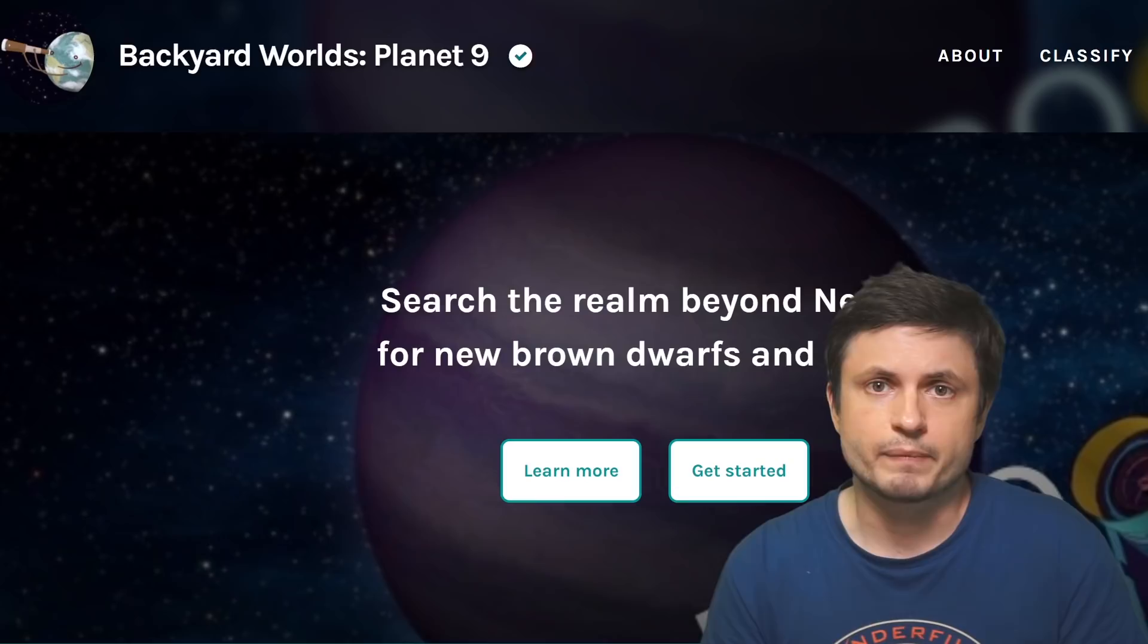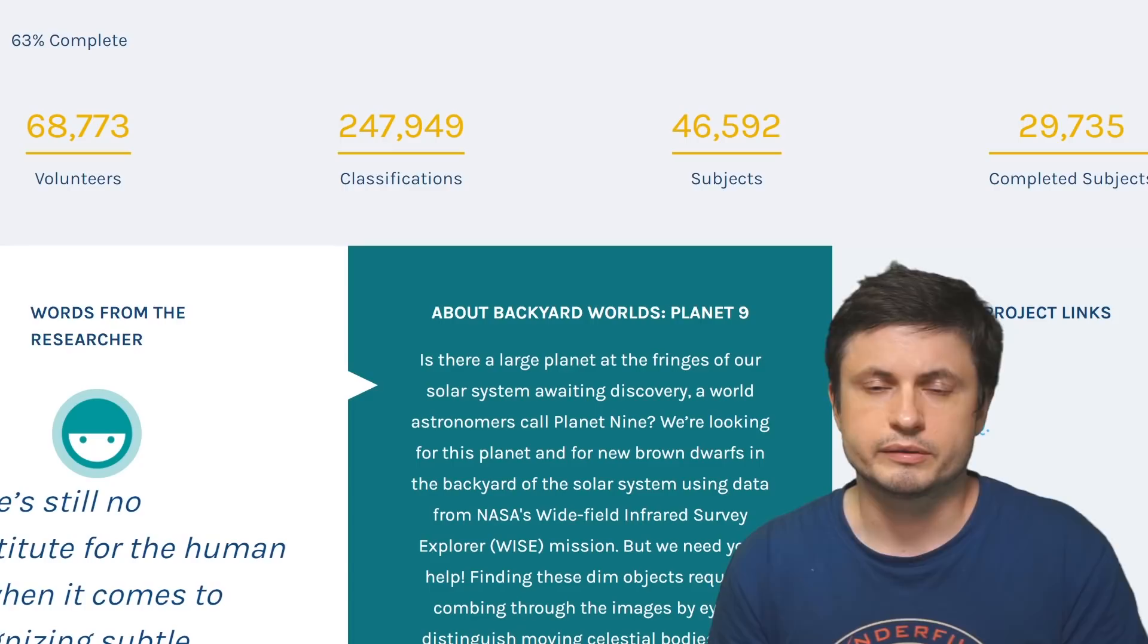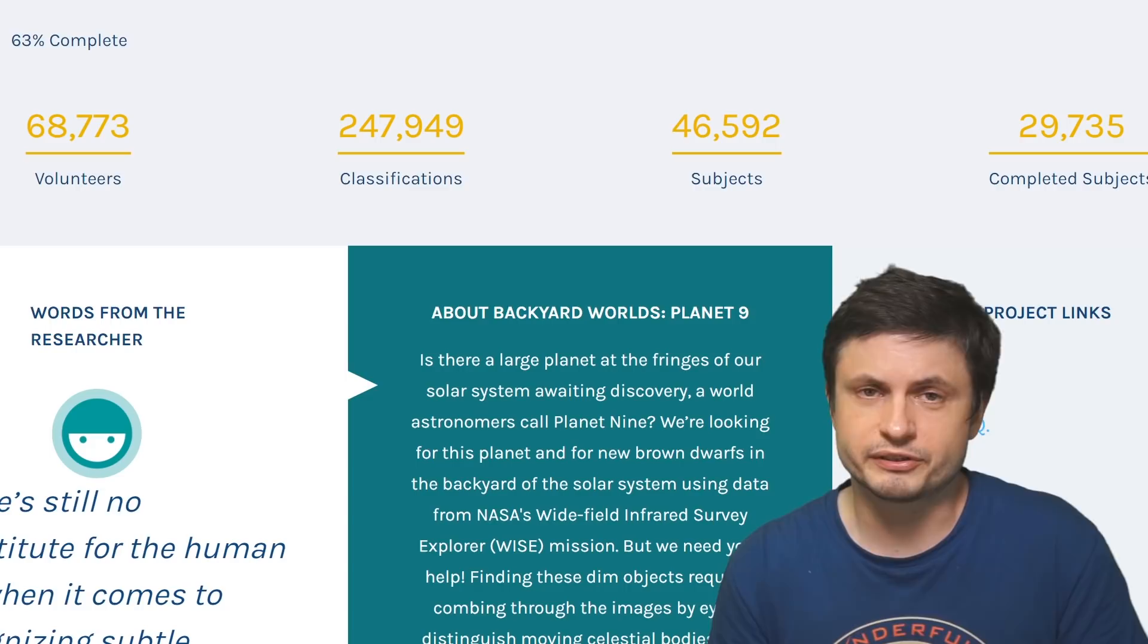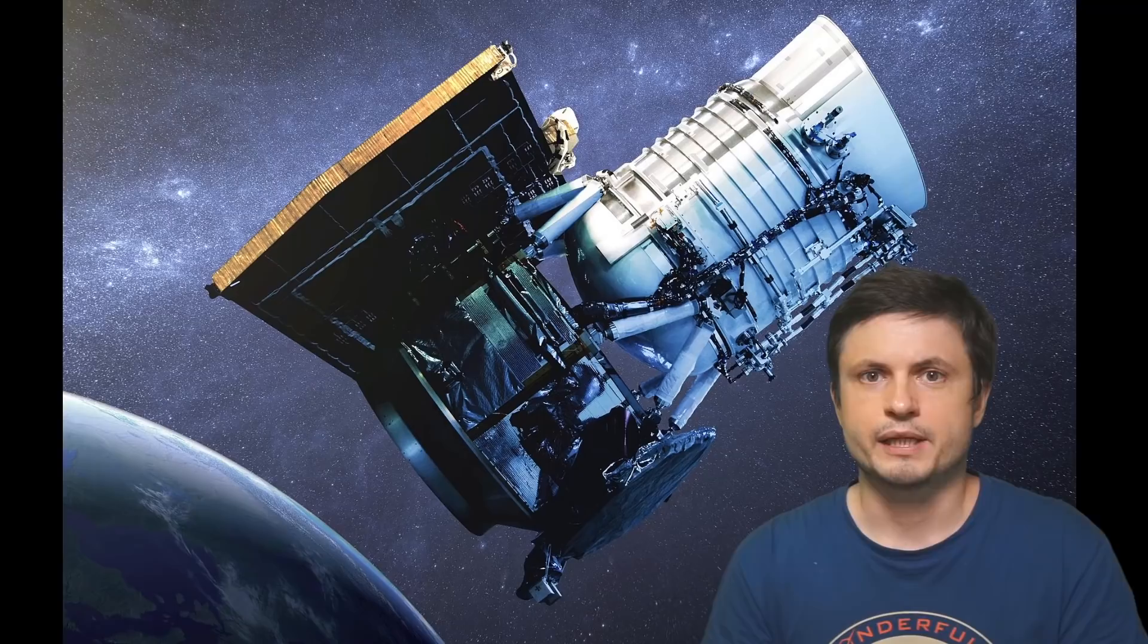There's this famous citizen science project that's been running for a few years, the one known as the Backyard Worlds Planet Nine, that's already discovered quite a lot of incredible things out there. And it just so happens that once again an amateur astronomer was able to find something unusual.